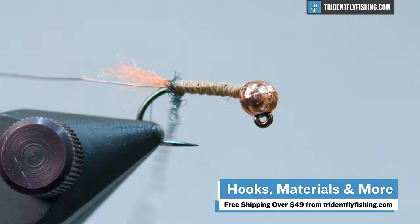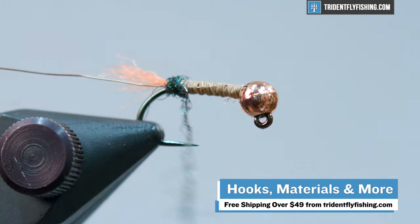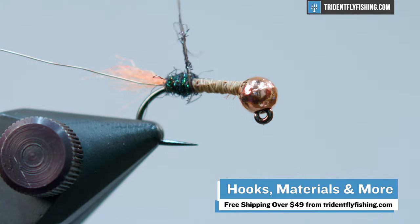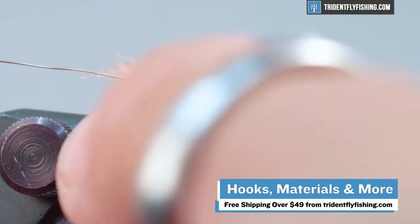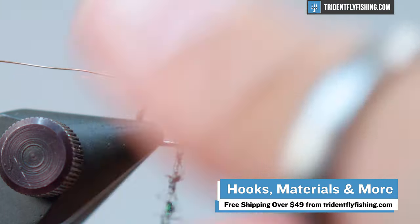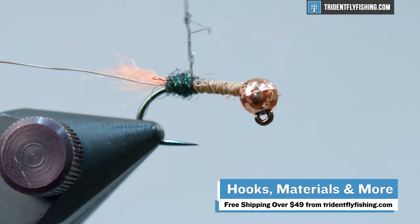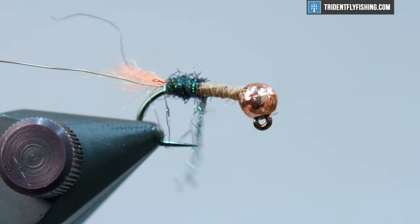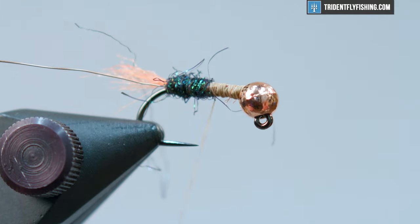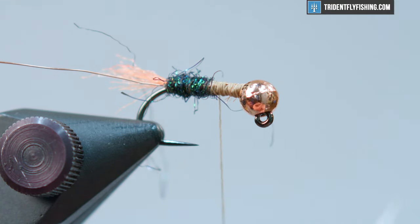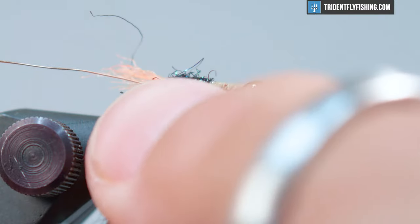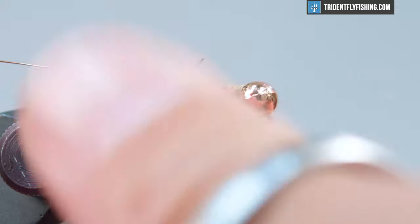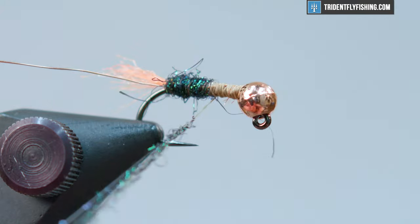All the materials that we're working with today can be found at tridentflyfishing.com and orders over 49 bucks do ship for free. You want to make sure your dubbing is tight on your thread so you can get that slim bodied profile. You'll see I'm just adding dubbing as I go. You don't want to over dub your thread.